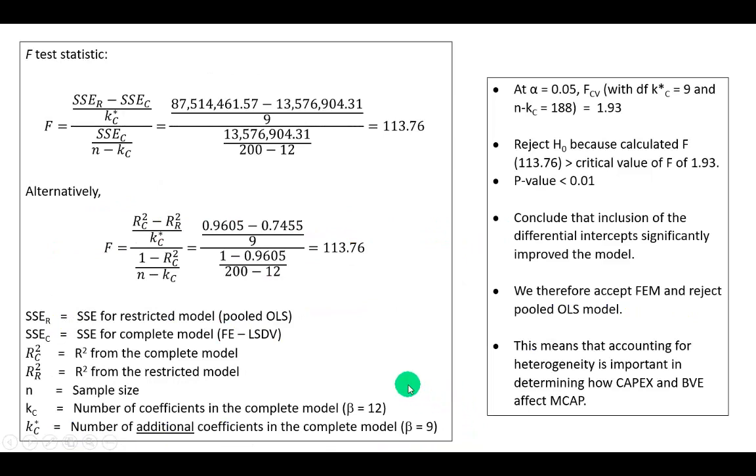So to do that, we're going to construct the partial F-test, and we could either calculate using sum of squares error or R-squared. Either way, the key question here is,